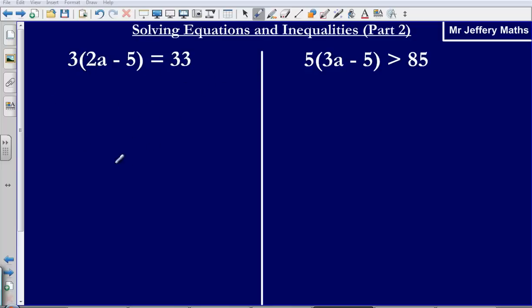So here I've got 3 bracket 2a minus 5 is equal to 33. First thing that I'm going to do is I'm simply going to multiply out the brackets. So generally when I see a bracket in a GCSE exam I'm going to try to get rid of it by multiplying it out.